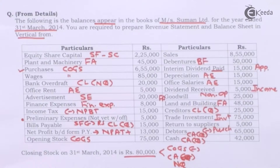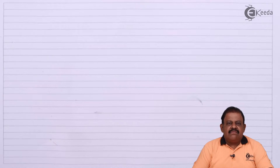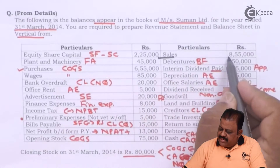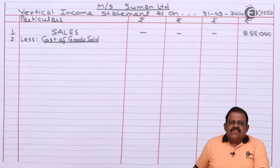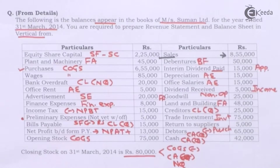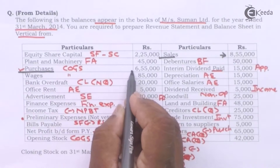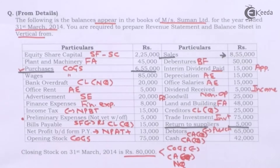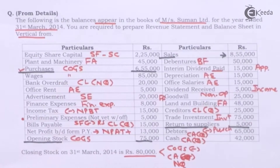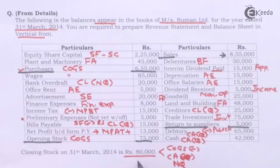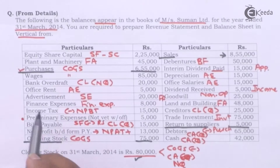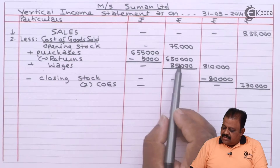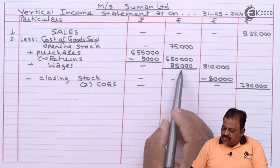Having gone through the question, let us prepare the format. While preparing the income statement, the first item is sales — here we have sales of 8,55,000. Less cost of goods sold: in cost of goods sold we have purchases 6,55,000, we are required to deduct return to suppliers 5,000, we have opening stock 75,000 and closing stock 80,000.